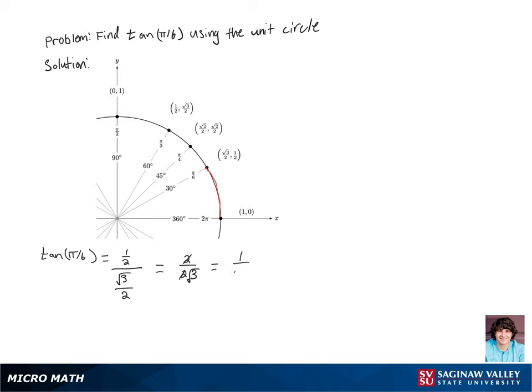So then we're left with 1 over √3, but we don't like having radicals in our denominator, so we're going to rationalize this by multiplying by √3 over √3, and we'll get our final answer of √3/3.